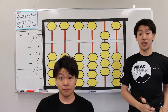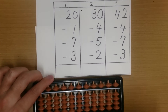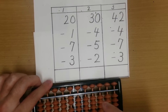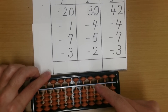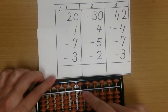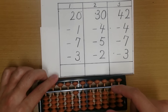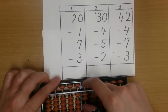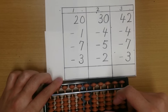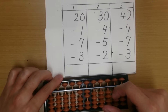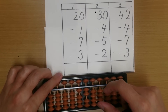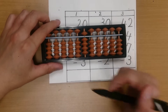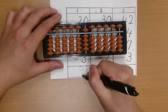Okay, let's check the VTR. Question number 1: plus 20, minus 1. 2 subtract 1, subtract 10, and add 9. Minus 7, minus 3. 2 subtract 3, subtract 10, and add 7. The answer is 9.